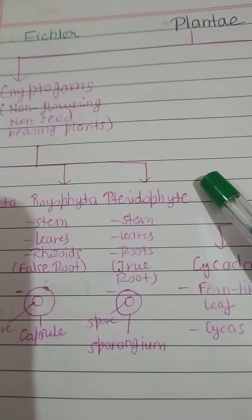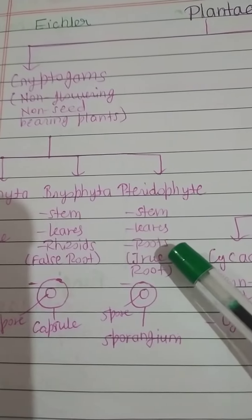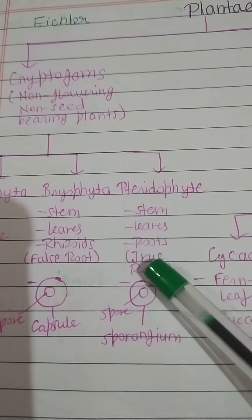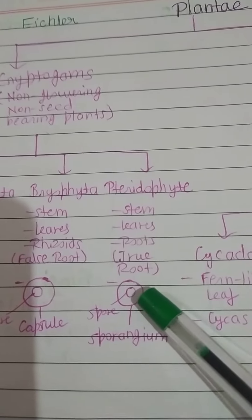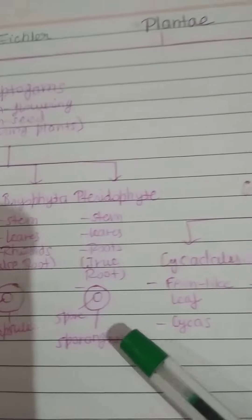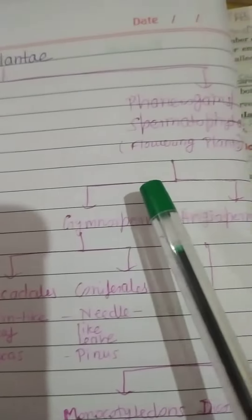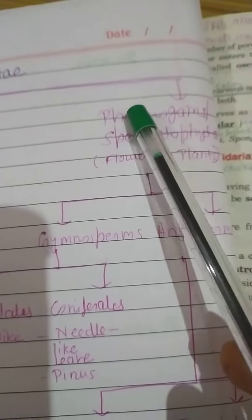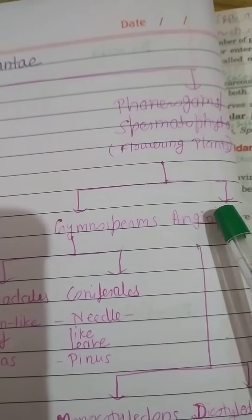Pteridophyta consists of stem, leaves, and roots. The roots are true roots and the spores are present inside the sporangium. Phanerogames consist of Gymnosperm and Angiosperm.